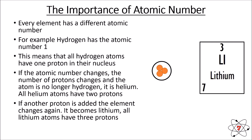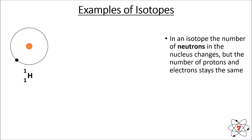As we change the number of protons, or change the atomic number, the element also changes. The number of protons in the nucleus determines which element we have. We also know the number of electrons is equal to the number of protons, so that will change as well. If the element changes and has two protons, there'll be two electrons — they must match each other.